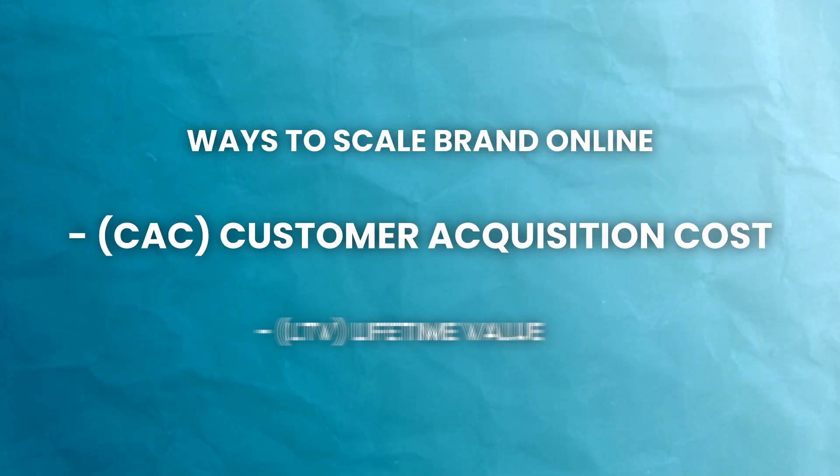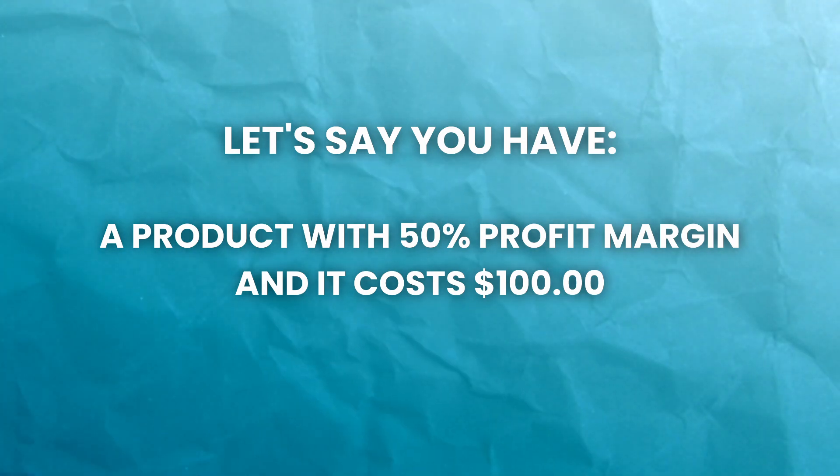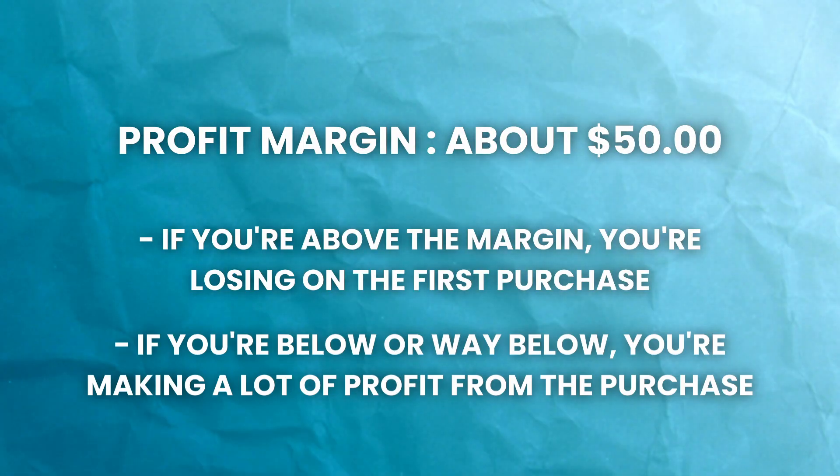The way that you scale is by understanding your CAC and your lifetime value. Your target CAC depends on the industry. If you're looking to be first-purchase profitable, look at your profit margin on that first product. For example, if you have a product with 50% profit margins and it costs $100, your breakeven front-end CAC is about $50. If you're above that, you're losing on that first purchase. A supplement brand might actually lose on the first purchase because they're looking for repeat customers buying again and again over the next year, versus something like an ice plunge or a mattress — a one-time purchase — where you really want profitable first-purchase CAC. The main goal is to be profitable on the front end if you don't have a strong lifetime value.